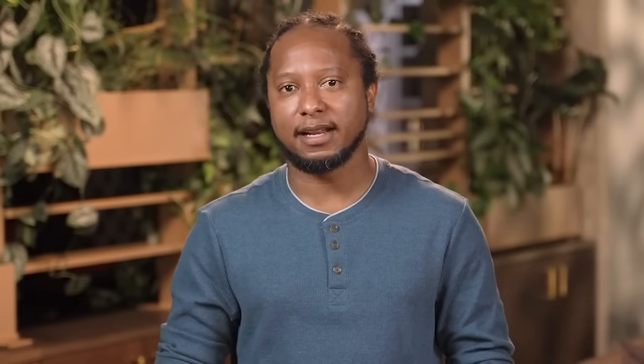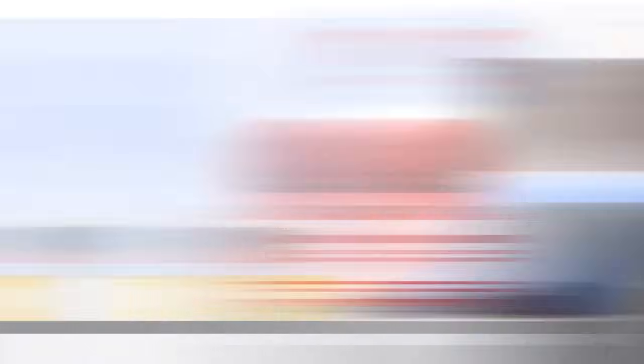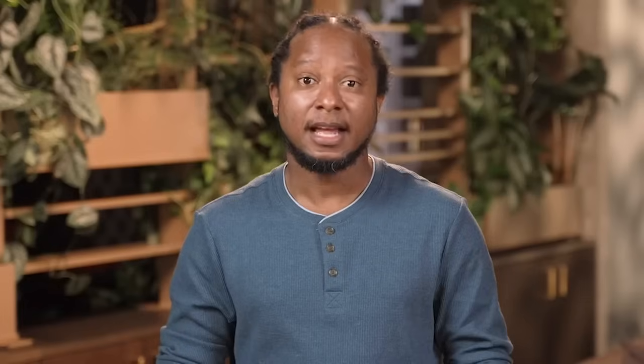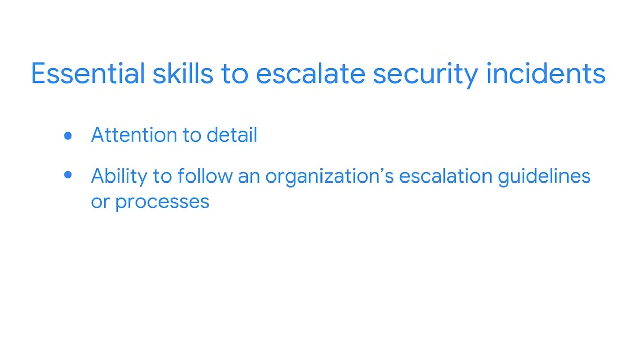As an entry-level analyst, it's unlikely that you'll be responding to security incidents independently. However, it's important that you know how to evaluate and escalate incidents to the right individual or team when necessary. There are two essential skills that would help you identify security incidents that need to be escalated: attention to detail and an ability to follow an organization's escalation guidelines or processes. Attention to detail will help you quickly identify when something doesn't seem right. Following escalation guidelines will help you know how to properly escalate the issue.